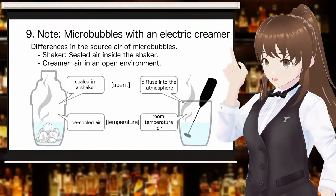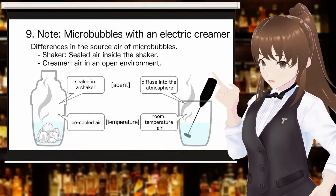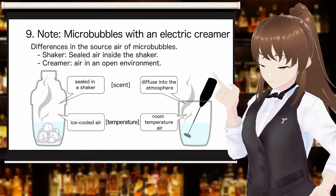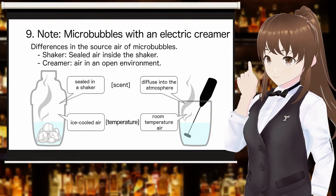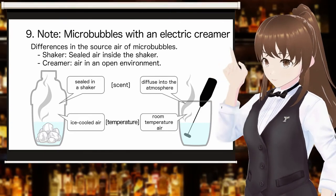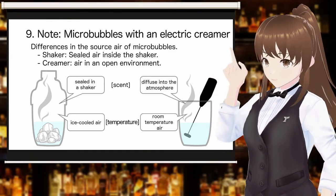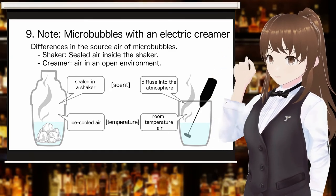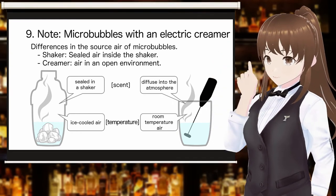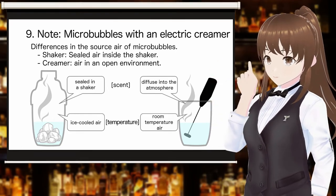A supplement about using an electric creamer to create microbubbles: shakes and electric creamers use different air sources for microbubbles — the difference between air in a sealed environment and air in an open environment. Due to this difference, it is thought that the generated microbubbles also have different scents and temperatures. It is recommended that consideration be given to whether the method of making microbubbles is appropriate for the cocktail to be created.